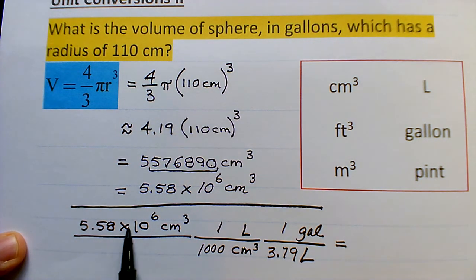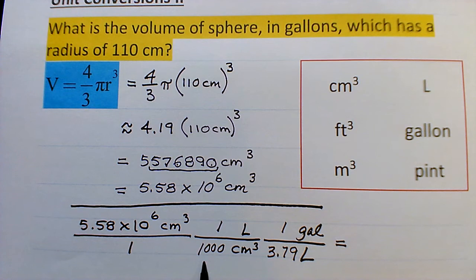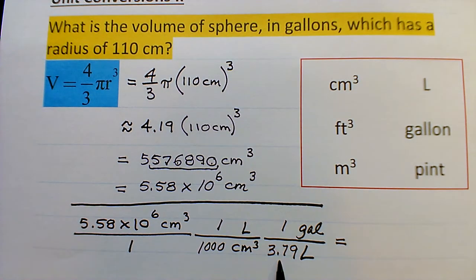So we're going to take 5.58 × 10^6, divide by 1,000, and then divide that result by 3.79.